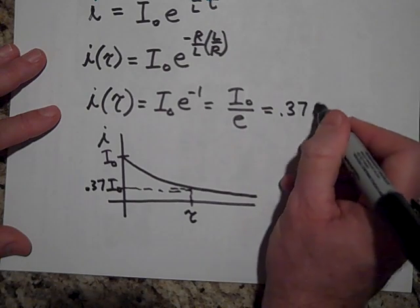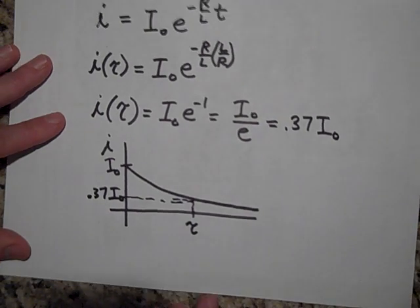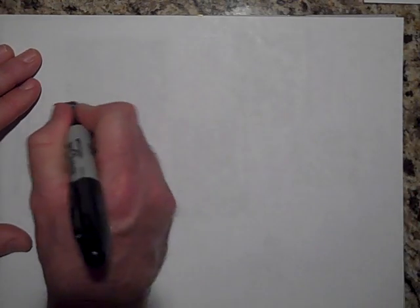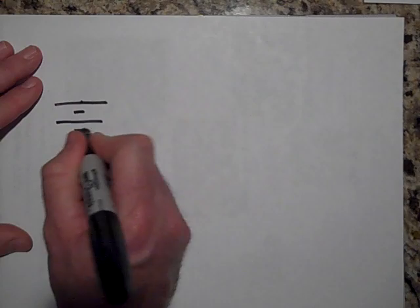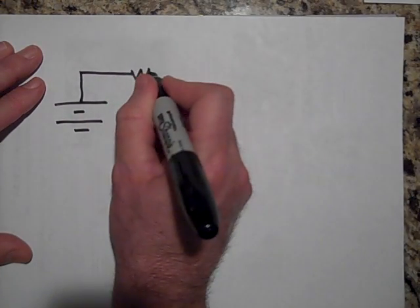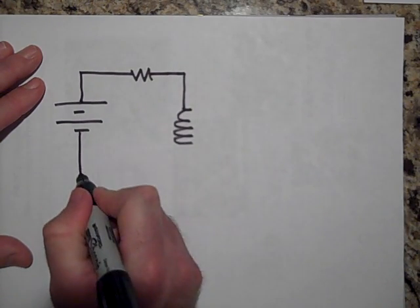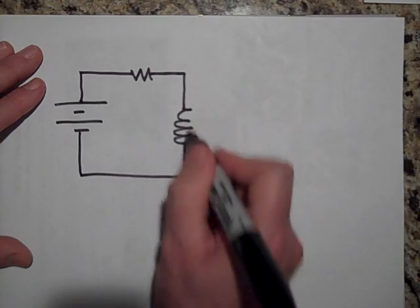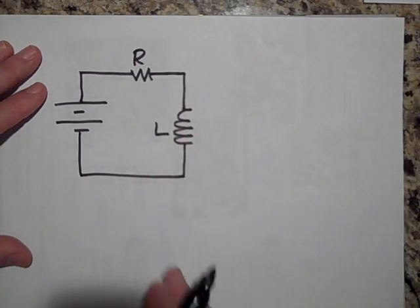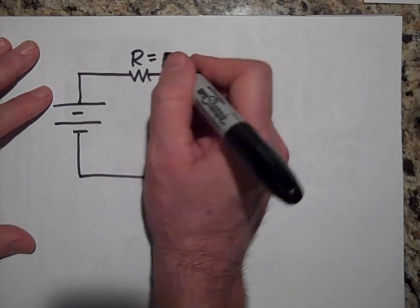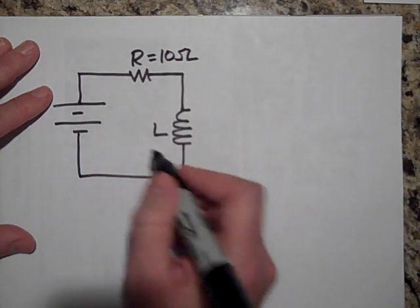Let me belabor this point a little bit more and tell you that if you do have a circuit like this with an R and an L, with a resistance and an inductor, and let's say the resistance is 10 ohms and the inductor is 0.02 henrys.